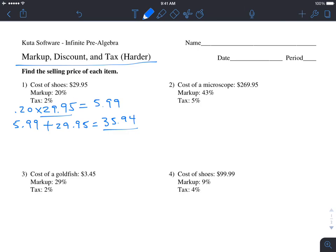On top of that price, we multiply by the tax percentage. We do 2% times $35.94. In our calculator, 0.02 times 35.94 equals $0.72 if we round. Then we add $0.72 plus the markup price of $35.94, and we get a final value of $36.66.